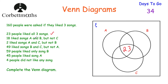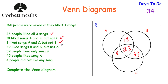18 people liked Song A and Song B — they go in the overlap of A and B but not C. 2 people liked Song A and Song C but not B, so they go in that region. 49 people liked Song B and Song C but not A, so they go in the overlap of B and C only.